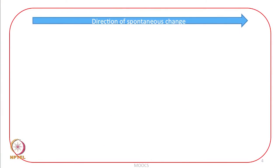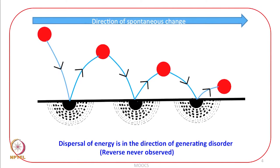What is the direction of spontaneous change? Is it in the direction of lowering of energy? But we cannot violate the first law of thermodynamics. Let us take an example: you take a ball and let it fall on the ground. It is a spontaneous process — when you are holding a ball and you just leave it, you do not need to do any work. The ball will automatically fall.